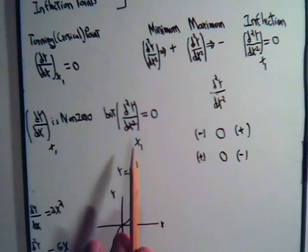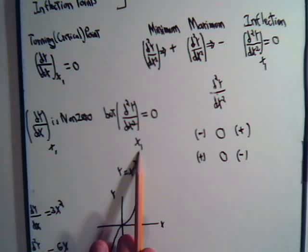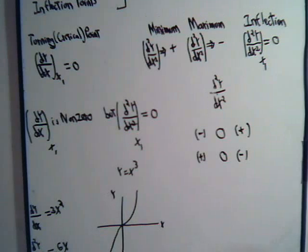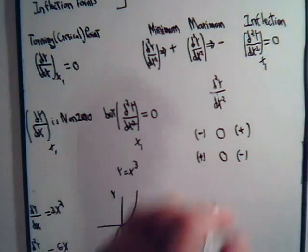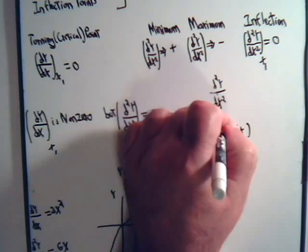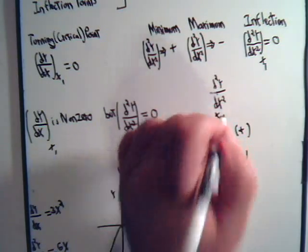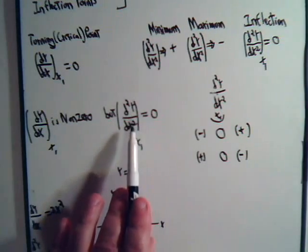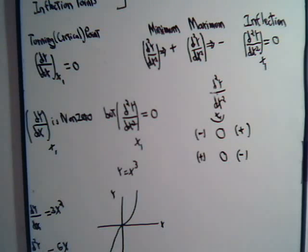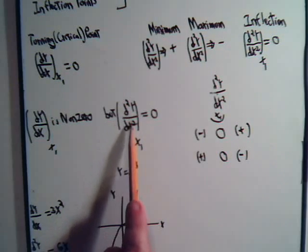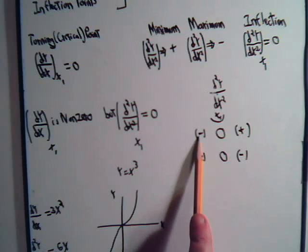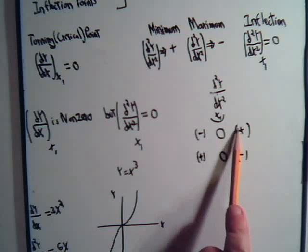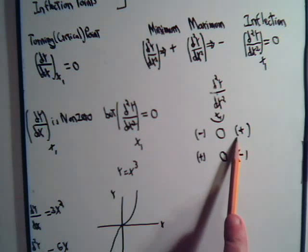What also has to hold true for the second class of inflection points is at the critical point x₁, or at the potential point of inflection x₁, this has to be 0, but then above the point x₁, the magnitude of the second derivative has to shift sign. So, at x₁, that's 0, just to the left of x₁, it might be negative, and just to the right of x₁, it shifts sign, becoming positive.